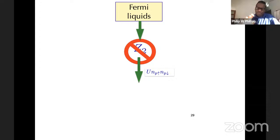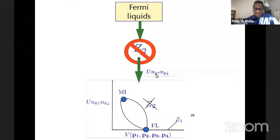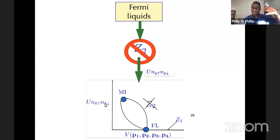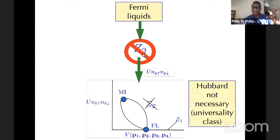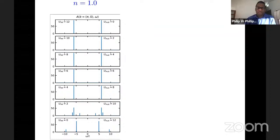This model breaks the Z2 symmetry with a term that is local in momentum space, and this interaction is much more relevant than the general four-fermion interaction with four momenta — it has scaling dimension minus two. We can understand this in general as a universality class of models that breaks this Z2 symmetry. Certainly part of the Hubbard interaction does that, and that's the part giving rise to this gap structure.